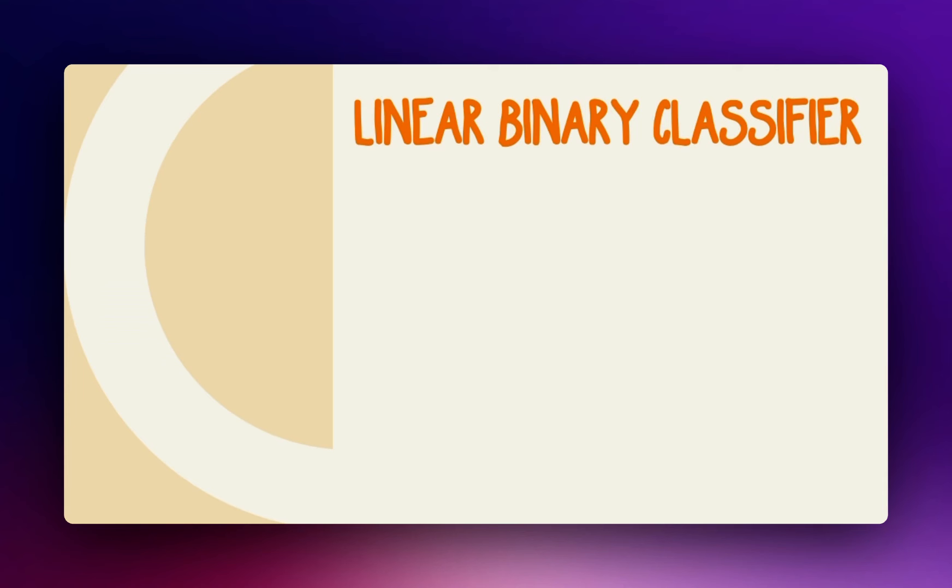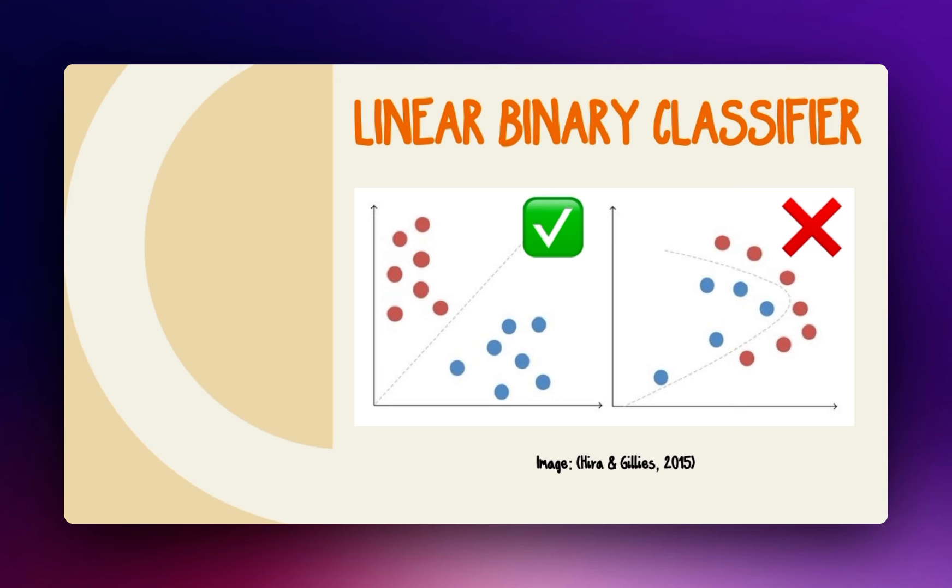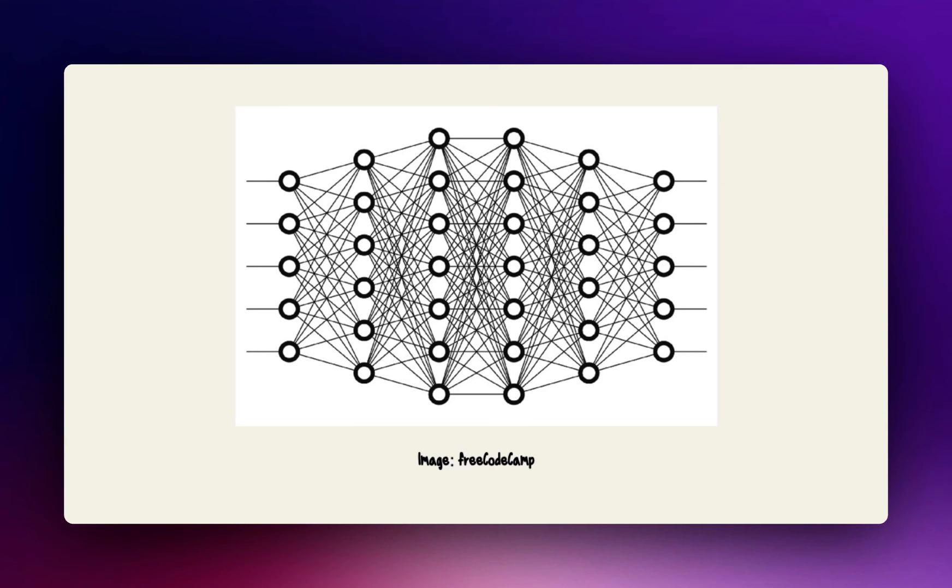In short, the perceptron is called a linear binary classifier because it classifies things into two groups, but can only do so if you can draw a straight line between them. Modern neural networks use multiple layers of perceptrons to make more complex predictions, and this is what makes the perceptron the building block of deep, modern neural networks. Thank you for watching.